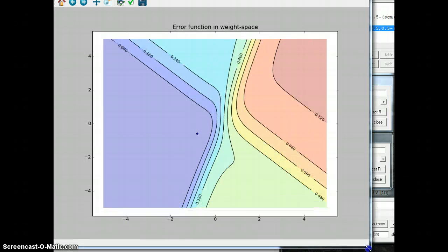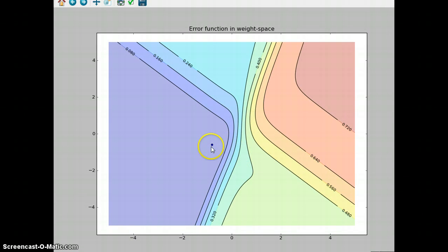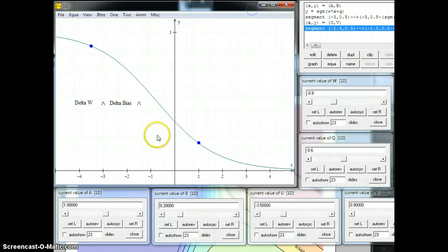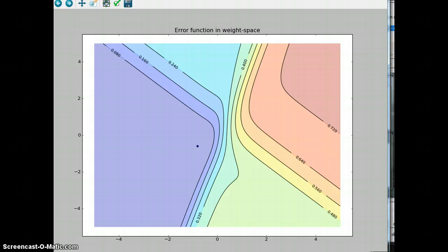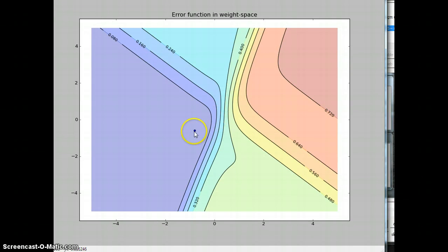So, this is just from clicking around yesterday. This little blue dot is at negative 0.8, negative 0.6. So, that's the value that you see here, where the weight is negative 0.8 and the bias is negative 0.6. That's this particular point.